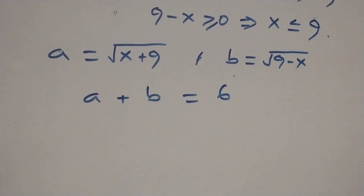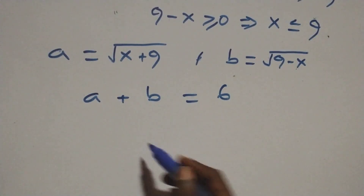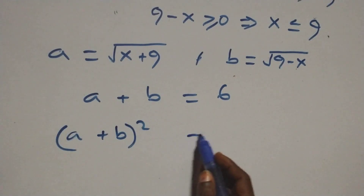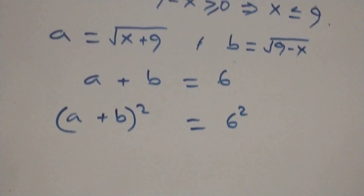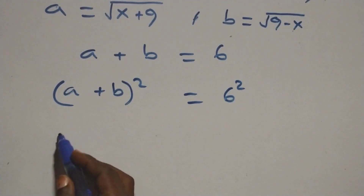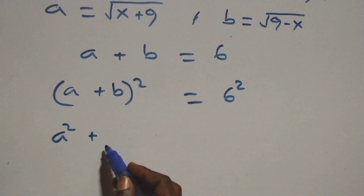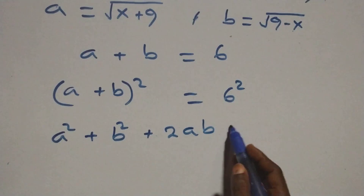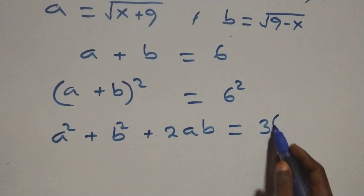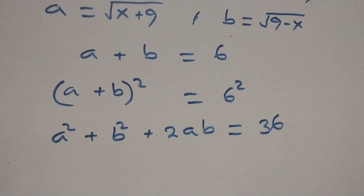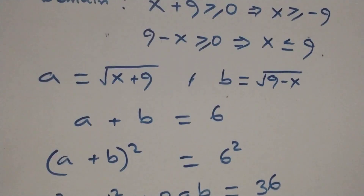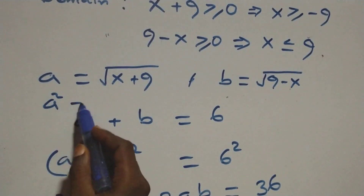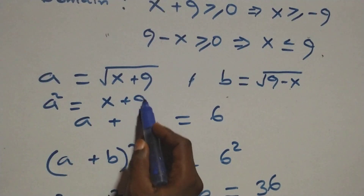The next step: we square both sides of this equation. We have (a plus b) squared equals six squared. The expression gives us a squared plus b squared plus two ab equals six squared, which is 36. We substitute a squared and b squared — when we square both sides, a squared is simply x plus nine because the square cancels the square root.